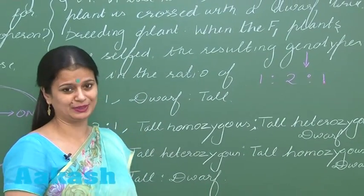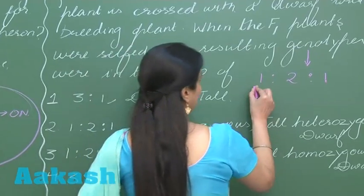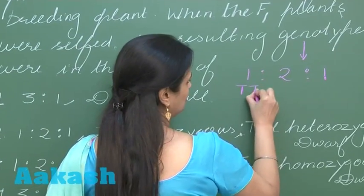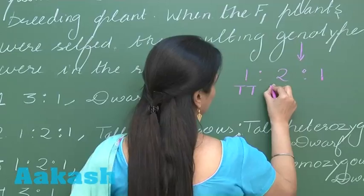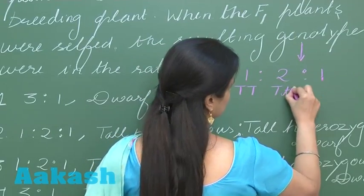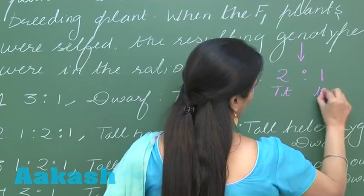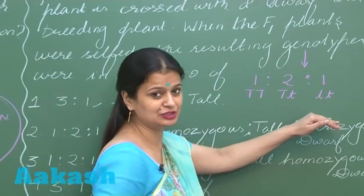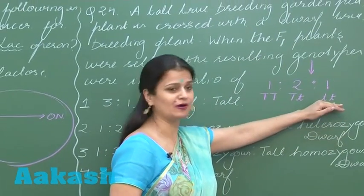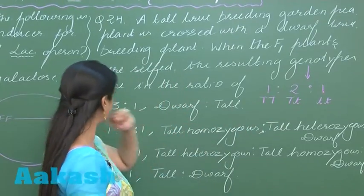So 1 is for homozygous tall, this 2 is heterozygous tall, and again 1—this is for the homozygous condition or you can simply say dwarf condition, right?